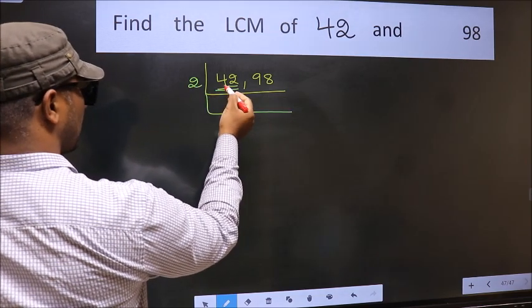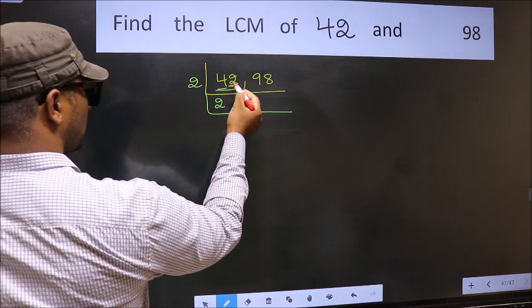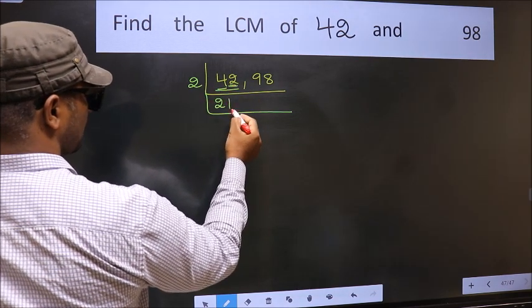First number 4, when do we get 4 in 2 table? 2 times 2 is 4. The other number 2, when do we get 2 in 2 table? 2 times 1 is 2.